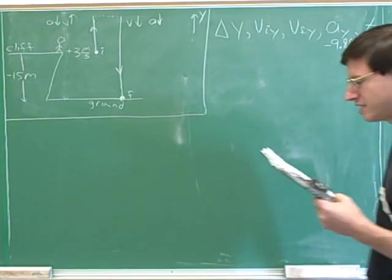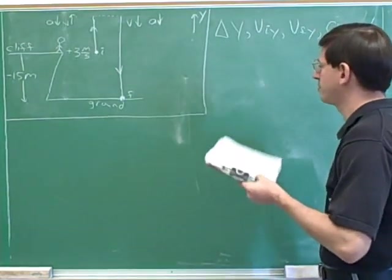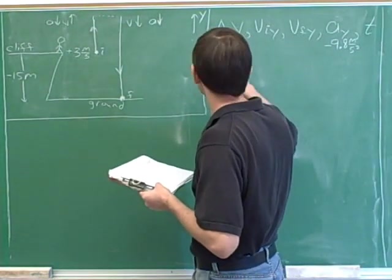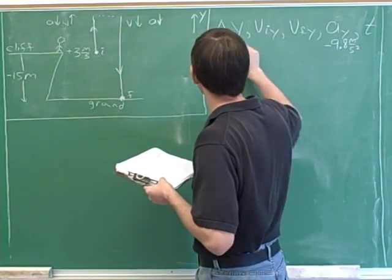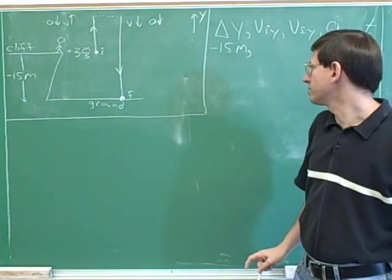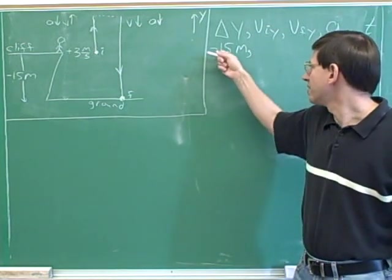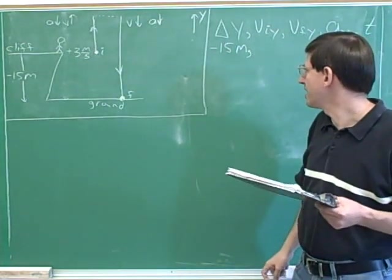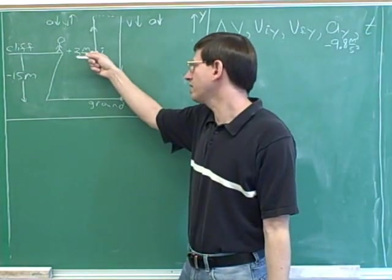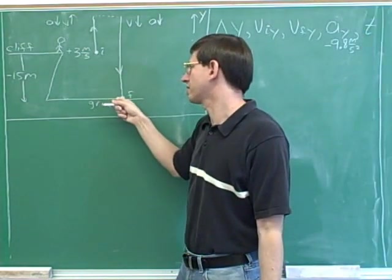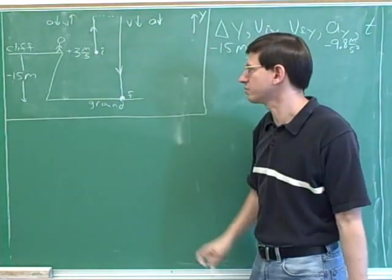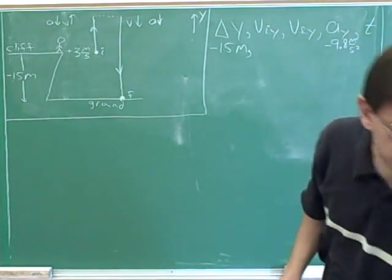A person stands on the edge of a cliff that's 15 meters above the ground. We've already seen how that gives us our displacement, which is negative 15 meters. A lot of people would get that wrong — they wouldn't realize the displacement is negative 15. The initial position is on the cliff, and the final position is on the ground. Going from initial to final, we're moving downwards, which is our negative direction since we chose upwards as positive.